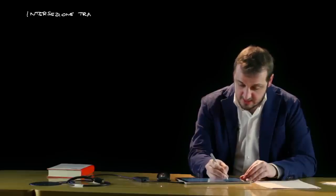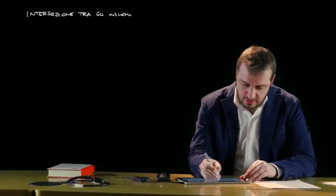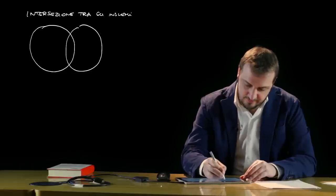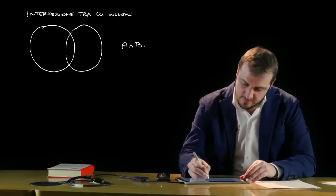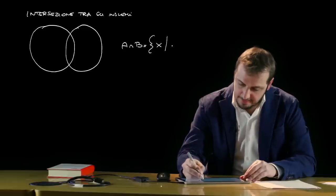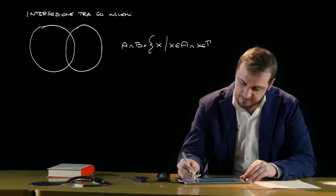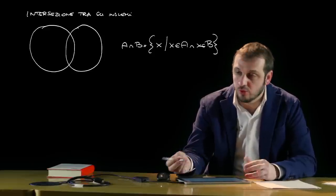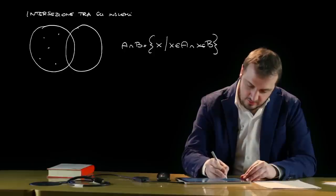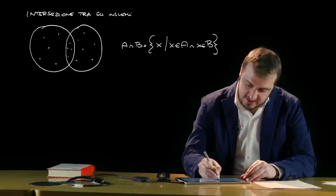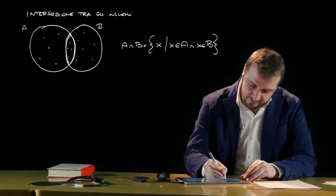Vediamo adesso le operazioni che è possibile fare con gli insiemi. Esistono due operazioni fondamentali: l'intersezione e l'unione. L'intersezione tra gli insiemi è anch'essa un insieme: prendendo l'insieme A e l'insieme B, l'intersezione è l'insieme degli x tali che x appartiene ad A e x appartiene a B. Quindi l'insieme intersezione è costituito da tutti gli elementi comuni sia ad A che a B.